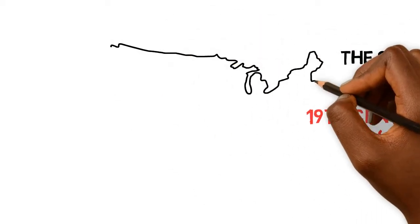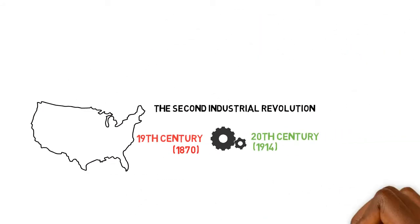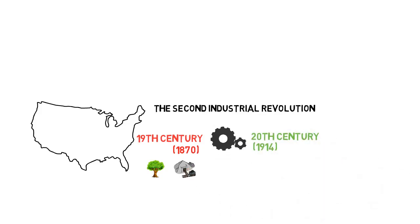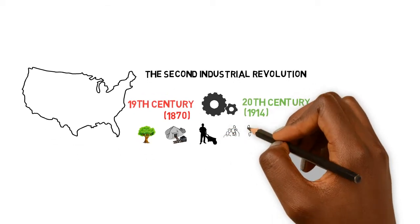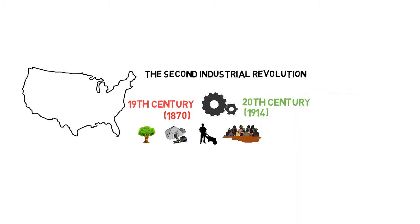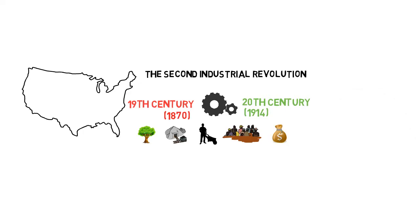The location of the Second Industrial Revolution was America, and its cause could have been the natural resources from the newly acquired territories following the American Civil War, a growing supply of labor immigrating from Europe and the migration of emancipated African-Americans, also perhaps an expanding market for manufactured goods and the availability of capital for investment.